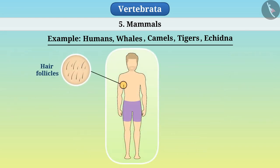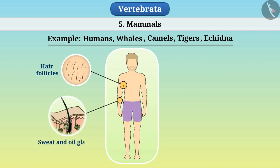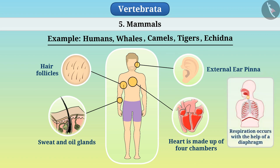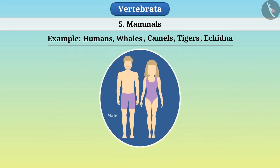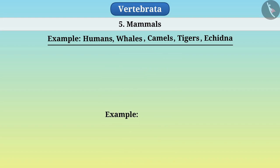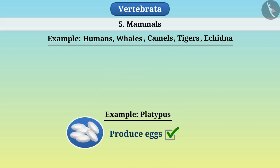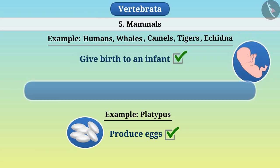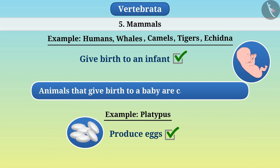They have hair follicles on their skin. Sweat and oil glands are found in the skin. External ear pinna is present. Their heart is made up of four chambers. Respiration occurs with the help of a diaphragm. Male and female are different and fertilization is internal. Some mammals such as platypus produce eggs, while all other mammals give birth to an infant — animals that give birth to a baby are called viviparous.